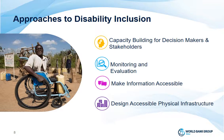Making information accessible is about being aware that there are communication barriers — for example, not being able to see, hear, or touch. We can try to provide information in multiple formats, such as text, audio, SMS, or video. Finally, designing accessible physical infrastructure is important because accessibility from the start keeps additional costs minimal. We can apply accessible design standards and use universal design practices.